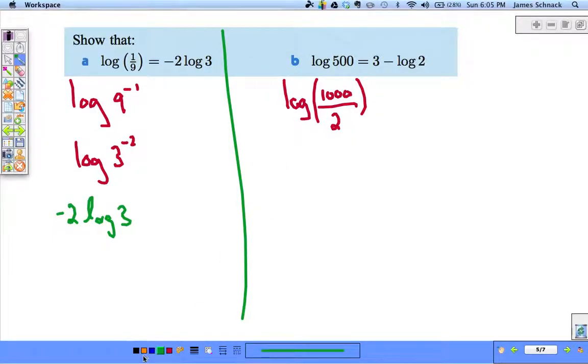And now we can break this apart. Log of 1,000, minus log of 2, 10 to what power is 1,000? Well, golly, it's 3. And there we go.